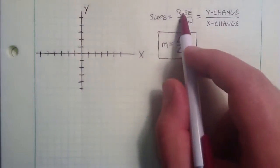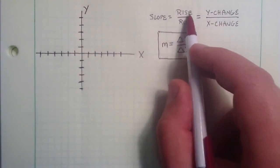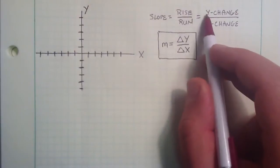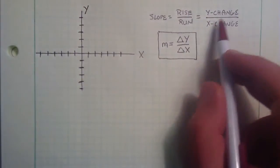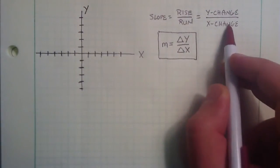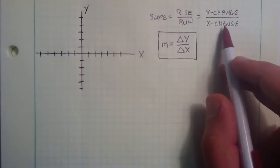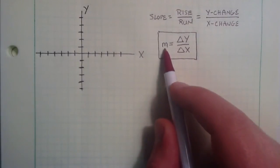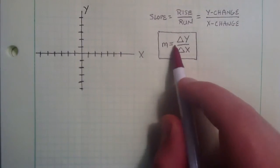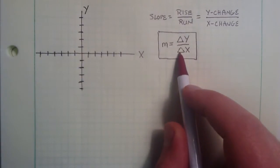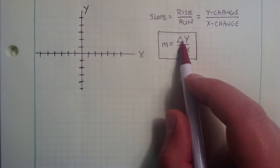The slope of a line is really just its rise divided by its run, or how fast it's changing in the y direction compared to how fast it's changing in the x direction. It's common in algebra to refer to the slope as the letter m, and m is equal to delta y divided by delta x, and delta simply means change.